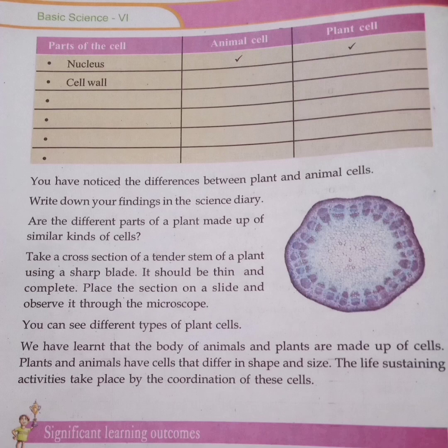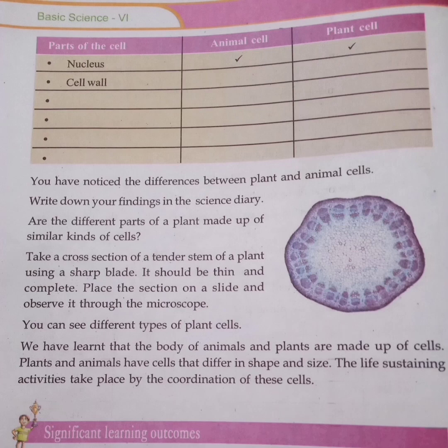Plants are made of cells. Plants and animals have cells that differ in shape. The life-sustaining activities take place by the coordination of the cells.